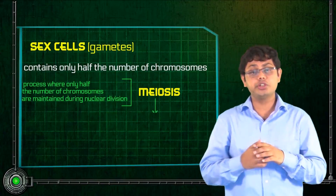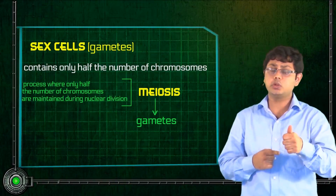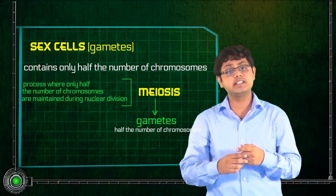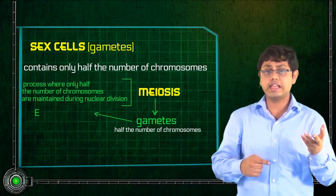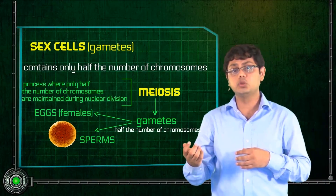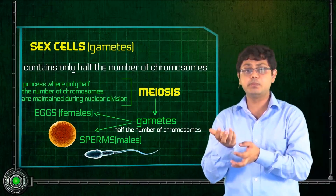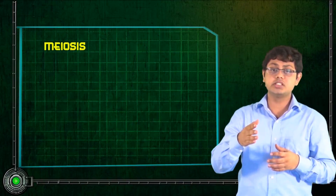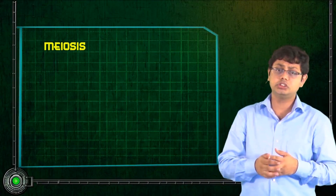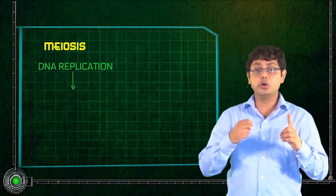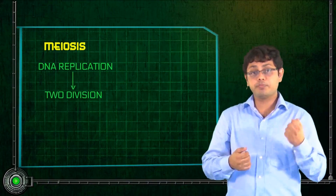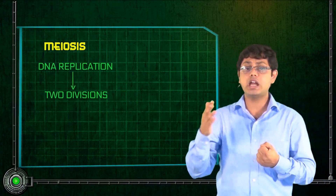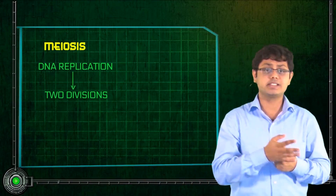Cells do meiosis in order to produce gametes. These cells which have half the number of chromosomes are called gametes — in females it is known as eggs and in males it is known as sperms, and both eggs and sperms together are called gametes. Cells do meiosis to produce gametes for sexual reproduction. DNA replication occurs once, followed by two divisions. The parent cell is diploid but the daughter cells are haploid, which means they have only half the number of chromosomes as the parent cell.